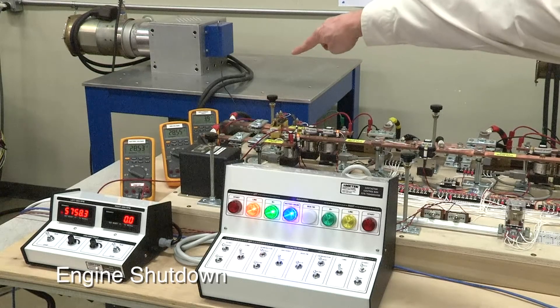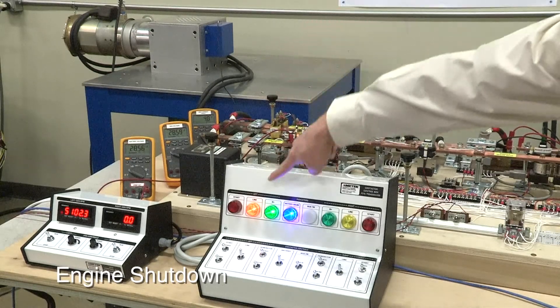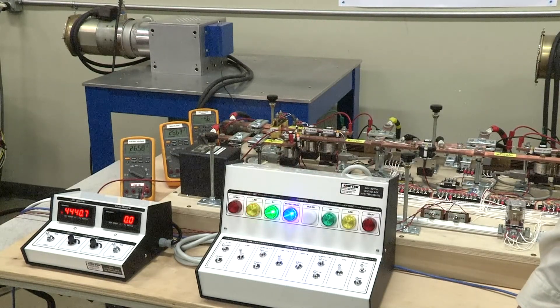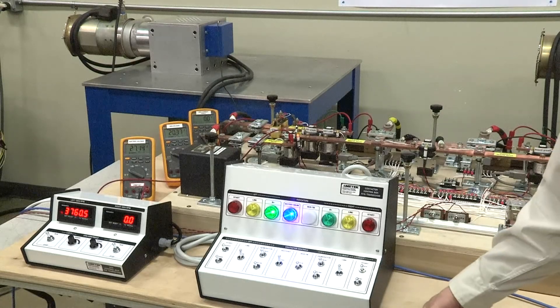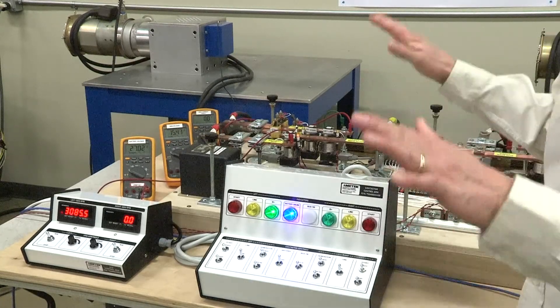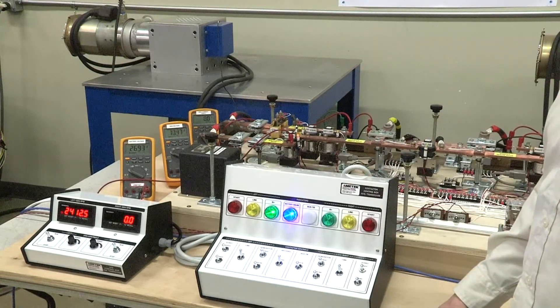All right, you can watch the voltage here. You're going to see the voltage drop off and the line contactor trip open. So we've lost voltage regulation and the engines are spooling down to zero again.